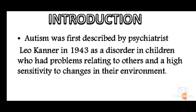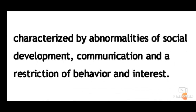Humans are social organisms and people have interactions with each other. When children don't do this, it becomes a disorder — that is Autism Spectrum Disorder. It is basically characterized by abnormalities of social development, communication, and restriction of behavior and interest.